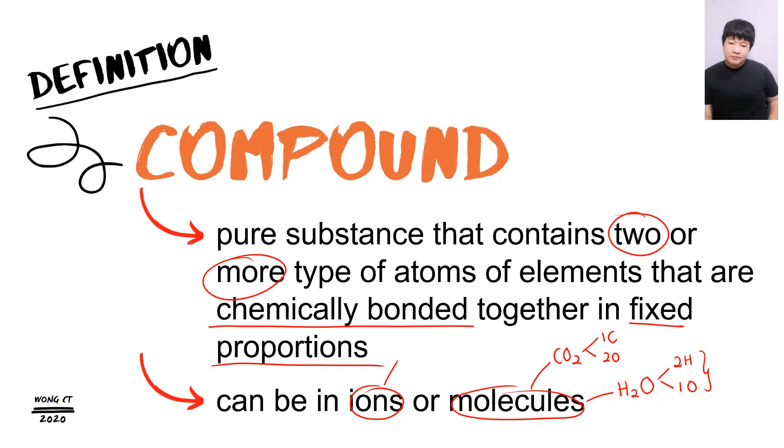Ion, for example, you have sodium chloride. In the sodium chloride, we have Na and we have Cl. And the ratio must be correct. Therefore, they must be in the fixed proportion.